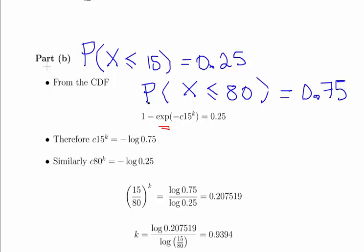So what we're going to do here is start off with this expression: 1 minus the exponential of minus C times 15 to the power of K, that is equal to 0.25. If we were to rearrange it, what we would get here is C times 15 to the power of K equals minus log, or natural log of 0.75.